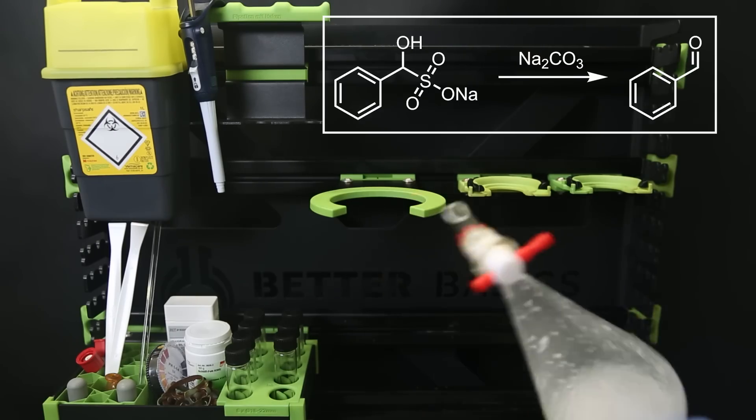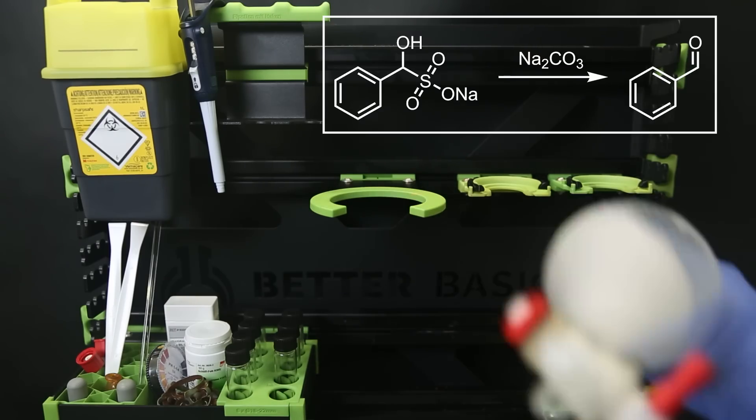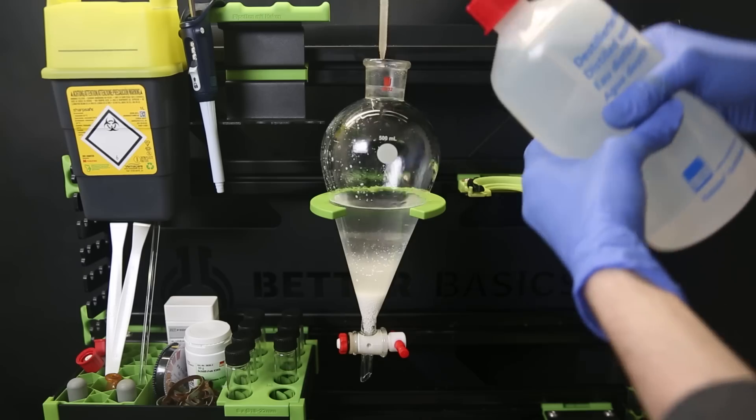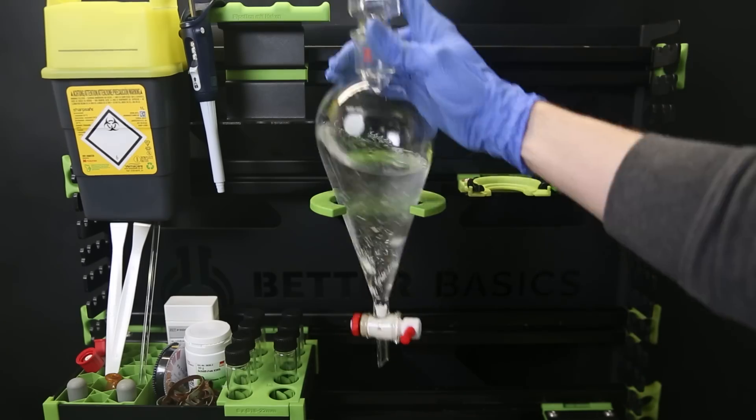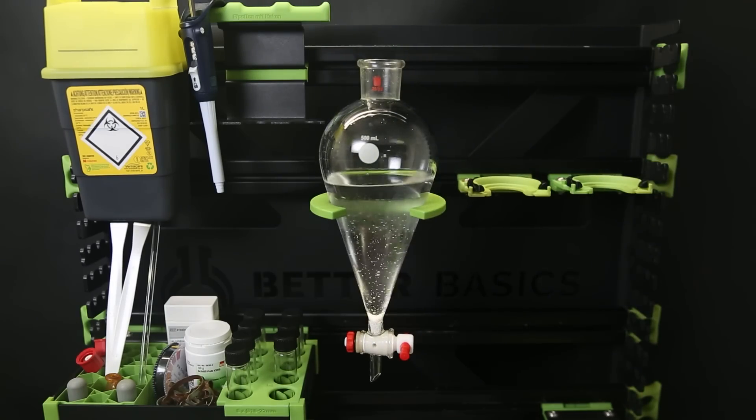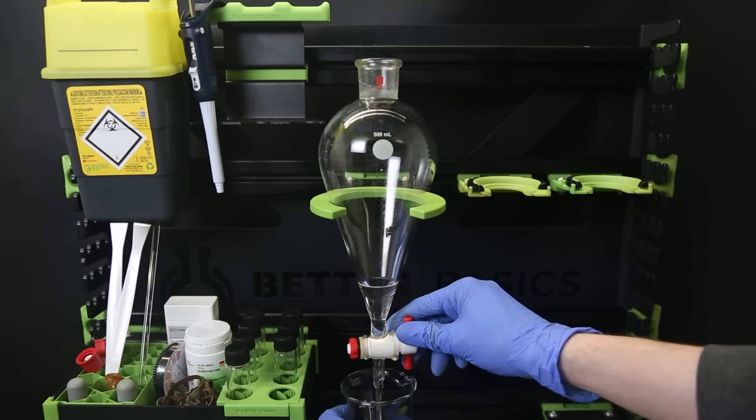What happens is that the base reacts with the bisulfite adduct to return the benzaldehyde. The sodium carbonate made it clog, so I add some water to loosen it. I then separate the layers and extract the water layer one more time with more ether.